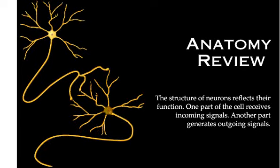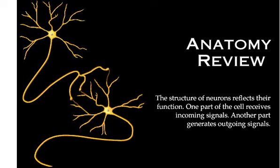The structure of neurons reflects their function. One part of the cell receives incoming signals, while another part generates outgoing signals.